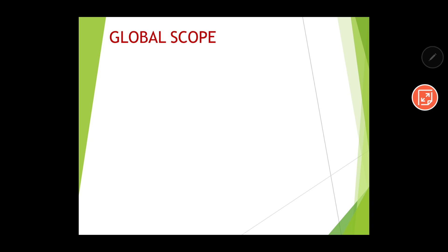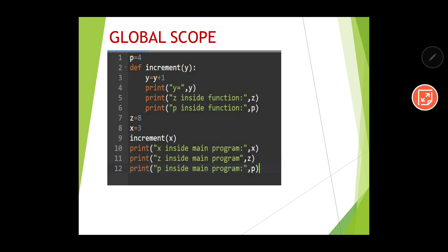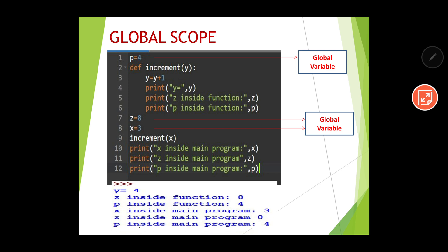Let me show the program again to revise. Here, p is a global variable because it is accessible throughout the entire program. Also, z and x are global variables. These three variables can be used throughout the entire program. This is the output of the program.